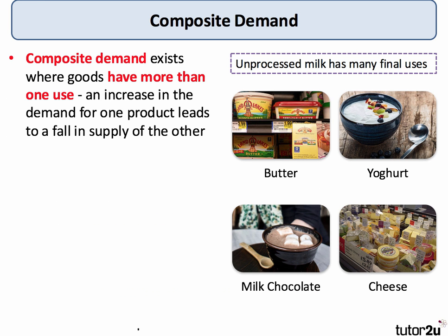Composite demand. A product is said to be in composite demand if it is demanded for several different uses — so a product has more than one use. And an increase in the demand for one product can lead to a supply fall in another product.